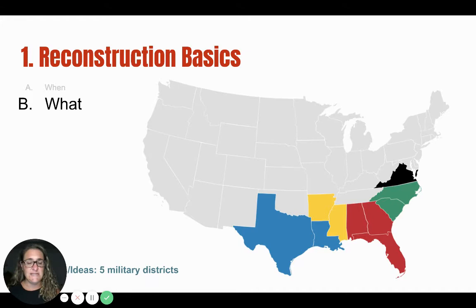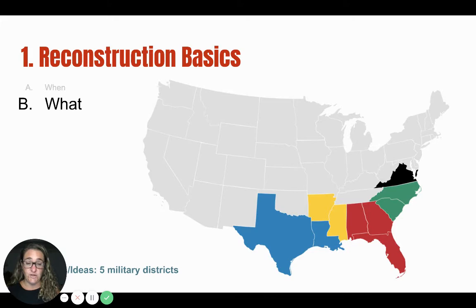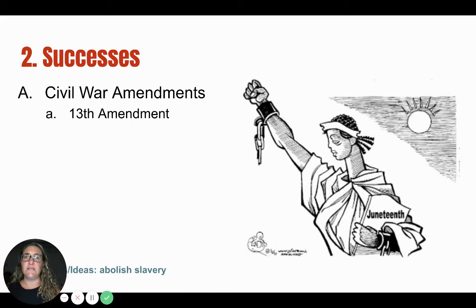Ultimately, Congress passed the Reconstruction Act of 1867. This act divided those southern states into five military districts. Each district was overseen by Union or Northern military commanders to make sure the southern states were following the new laws that the Republican Congress was passing after the Civil War. Now let's take a look at some of the successes — what were some of the positive outcomes of this time period?